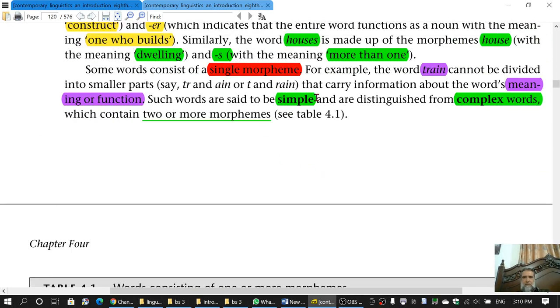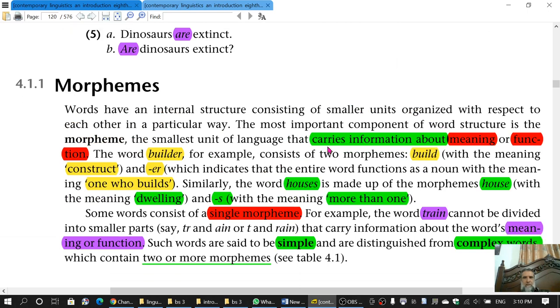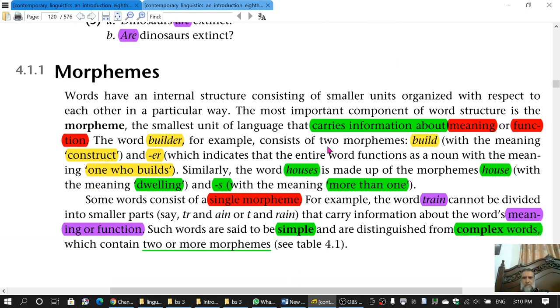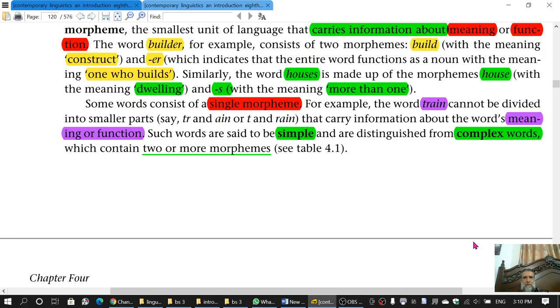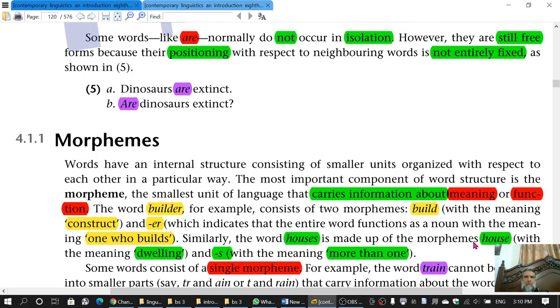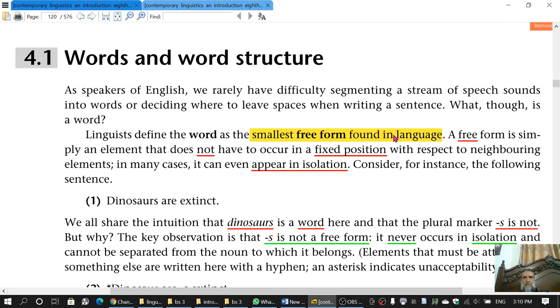So this information is important. Simple words consist of one morpheme while complex words consist of more than one morpheme. And we have already defined words that they are smallest free form found in language. So free form is not making distinction, we are not talking about morphemes here but words.